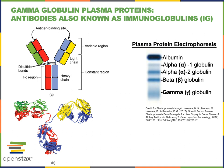In the gamma globulin band of the plasma protein electrophoresis, the primary proteins are antibodies, also known as immunoglobulins, abbreviated Ig. There are many different types of antibodies, and they are important for adaptive immunity — helping the body defend against infections. Antibodies are specific: they recognize a specific chemical pattern called an antigen. As the immune system develops acquired immunity, it produces antibodies that bind to antigens from specific pathogens to help defend against those specific infections.